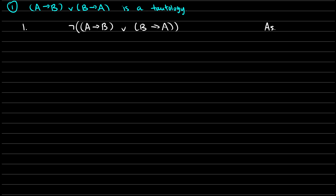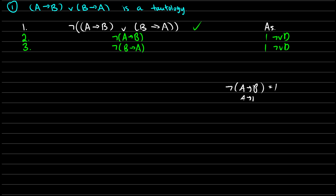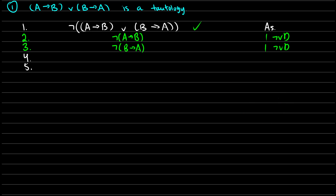Our first step is going to be lines two and three, and that's going to be not-or decomposition on line one. So if we have not (X ∨ Y), this means we get not-X and not-Y. So we're going to get not (A → B) in line two and not (B → A) in line three. We know that not (A → B) is true when A → B is false, which means A is true and B is false, which is the same as saying not-B is true. So for lines four and five, from line two, we get A and not-B — this is not-arrow decomposition.